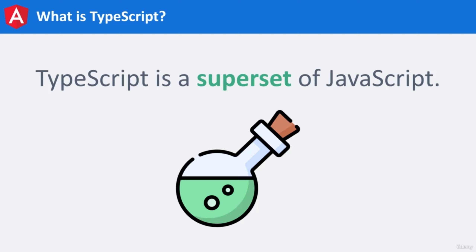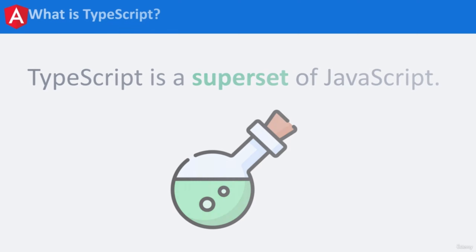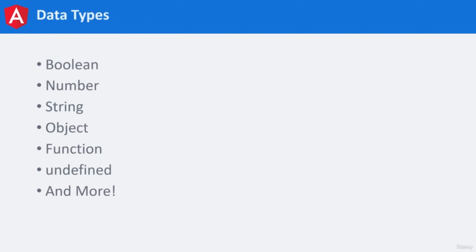Instead, TypeScript adds features to improve the developer experience. Notice how I said developer experience — TypeScript doesn't add features for enhancing the performance or security of an app. Instead, it's a language designed to help developers debug and design their applications. It accomplishes this goal by introducing static typing to the language. Data types are categories for our data — we have Strings, Numbers, Booleans, and Objects, just to name a few.